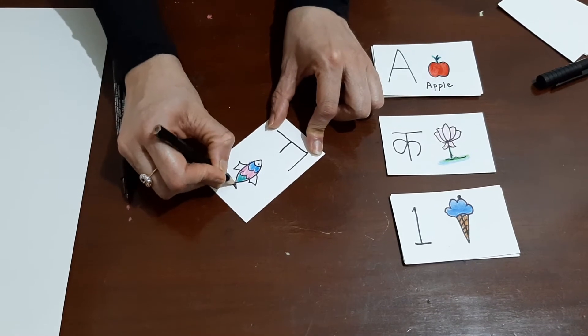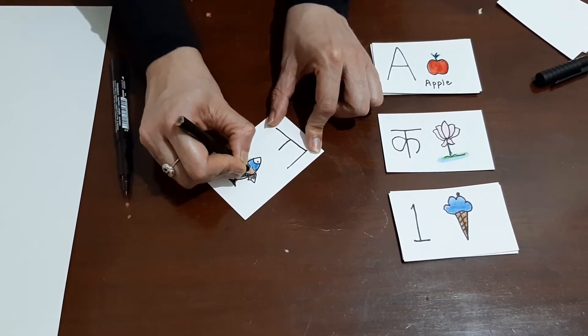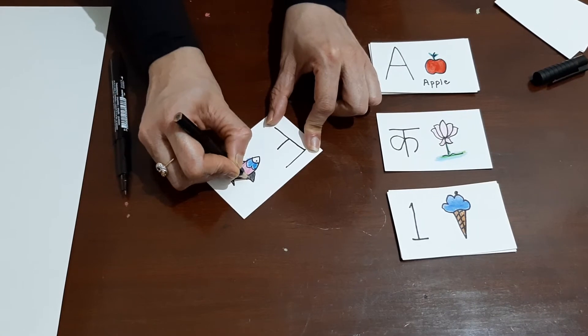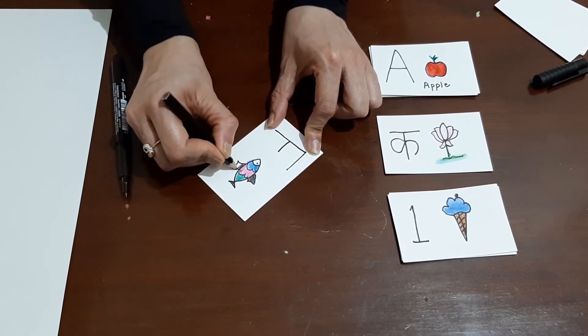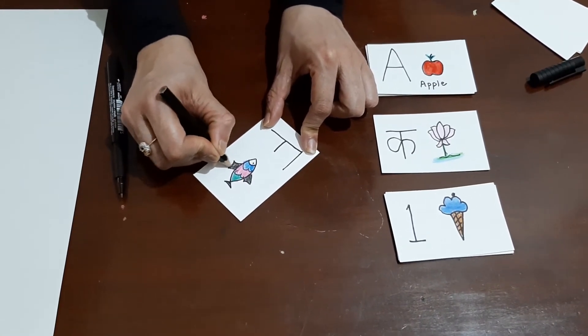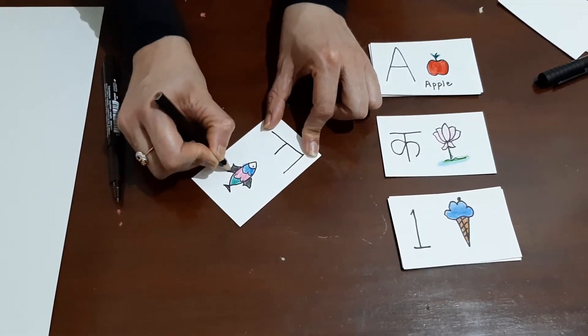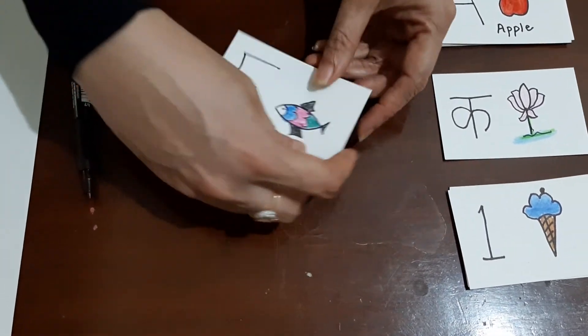Like this. So you can color the whole fish. And your flashcard for alphabet F is now ready. You can see this.